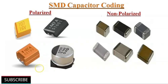Decoupling capacitors are often placed across the power supply lines of integrated circuits (ICs) or other components. These capacitors provide a local reservoir of charge, ensuring that the voltage supplied to the component remains stable, especially during sudden changes in current demand. This helps prevent voltage fluctuations that could affect the proper operation of the circuit.